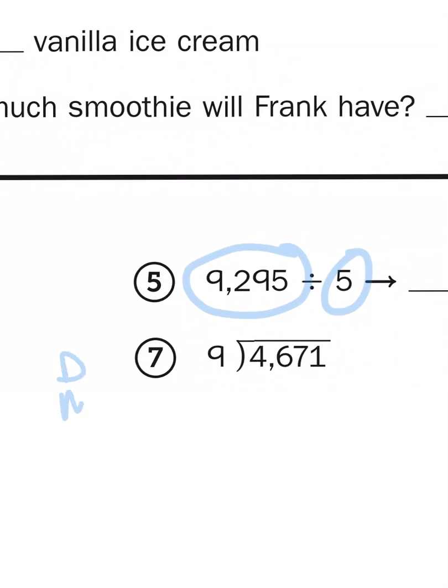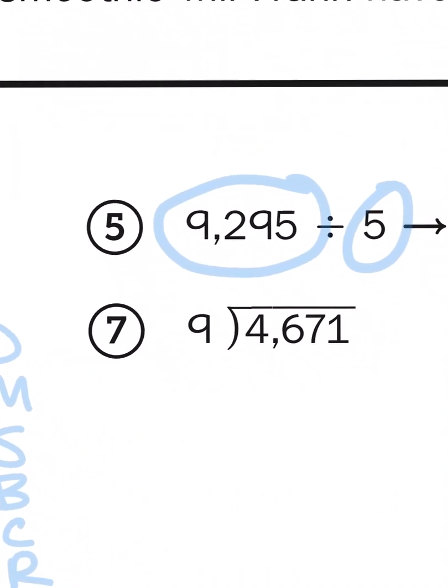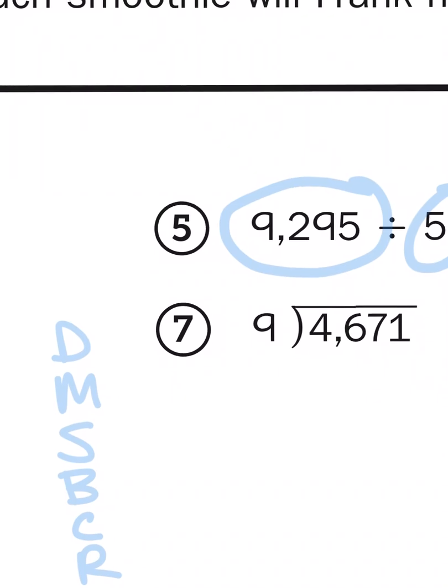And that requires us to use the long division strategy of division, multiplication, subtraction, bringing down, checking, and repeating. Dad, mom, sister, brother, cousin, rover. All right. So, I'm going to start with 9 into 4. Can I divide 4 by 9? No, I can't. So, I would put a 0 here because 0 times 9 is 0. I'm going to subtract. I'm going to bring down the 6, and I start over. Now, I could have just started with 46, knowing that 4 is too small to be divided by 9.